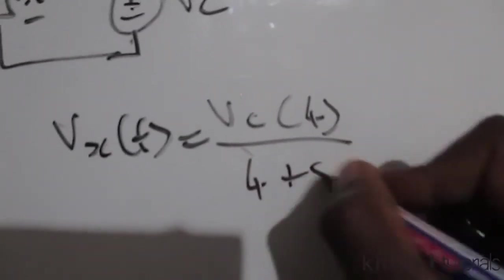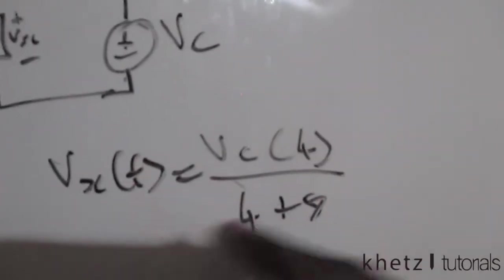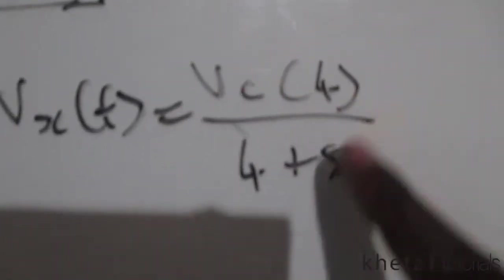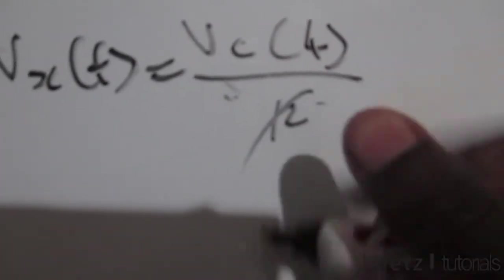Divided by 4 plus 8. This is just voltage division. We have this formula for Vc over here, so you just multiply it and divide it by that. At the bottom we have 12, so this is going to be 3, that's going to be 1.